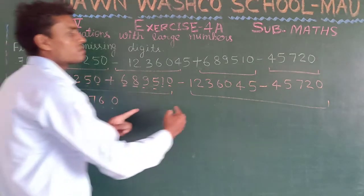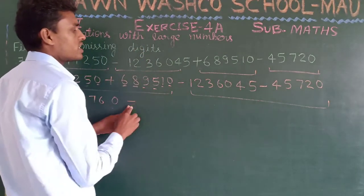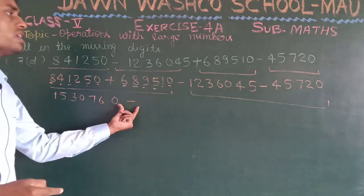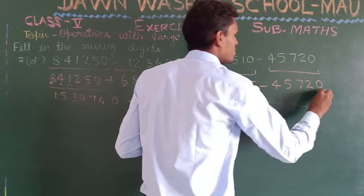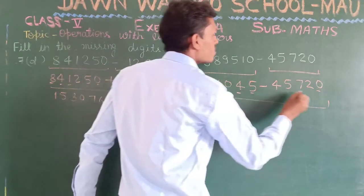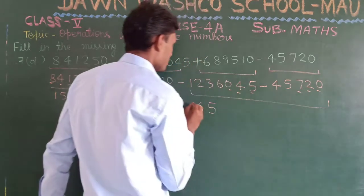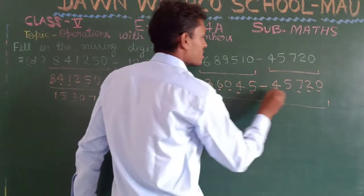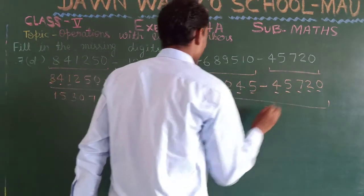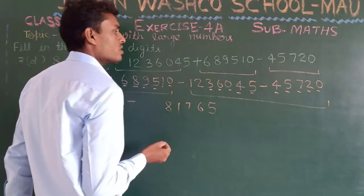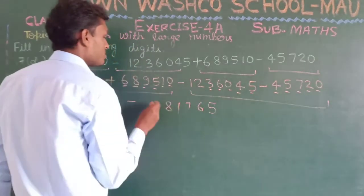Now we also add the two negative numbers together. Five and zero is 5. Four and two gives 6. Zero and seven is 7. Six and five gives eleven — write 1 carry 1. Three and one is four, four and four gives eight. Eight and twelve gives twenty — write the relevant digits and carry.